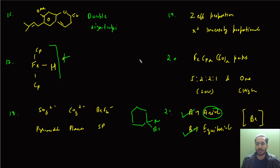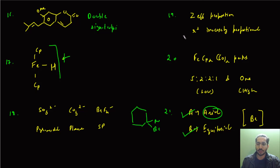There was a question on the Allred-Rochow electronegativity scale. The correct answer is that it is directly proportional to the effective nuclear charge (Z-effective) and inversely proportional to the r² value.